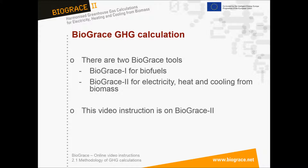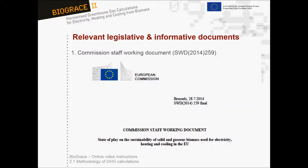All information is accessible through www.biograze.net. In order to fully benefit from this video instruction and the ones that follow, it is highly recommended that you understand the wording and requirements of the greenhouse gas calculation issues in the EC Staff Working Document 259. The Staff Working Document mainly describes elements that differ in the greenhouse gas calculation methodology for heat, electricity and cooling from solid and gaseous biomass compared to the corresponding methodology for biofuels or bioliquids in the Renewable Energy Directive.